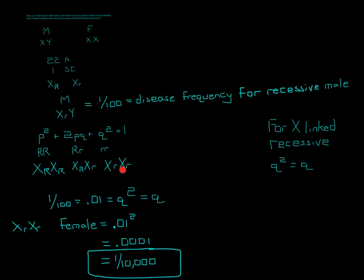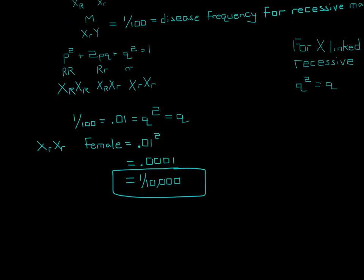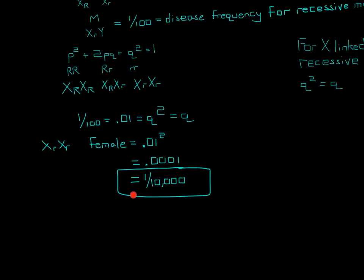So it's just saying that the female has two X-linked recessive copies. Therefore, she will be affected by the condition, and we're finding that rate. So we know that Q is 1 out of 100, which equals 0.01. So 0.01 squared is 0.001, and if you put that into a fraction, that would be 1 over 10,000. So that would be your final answer.